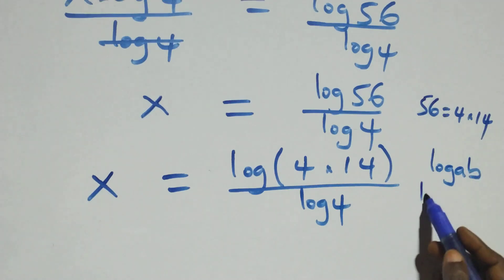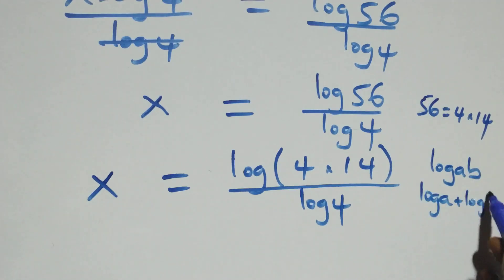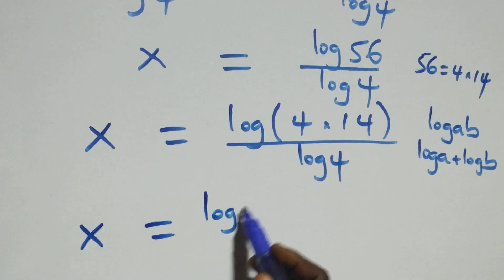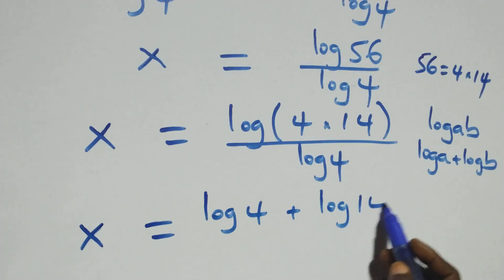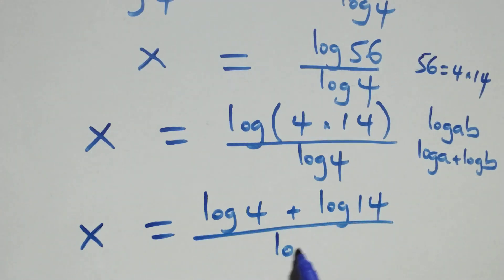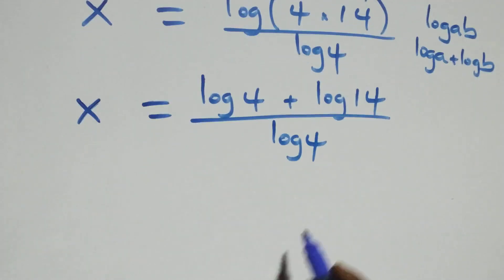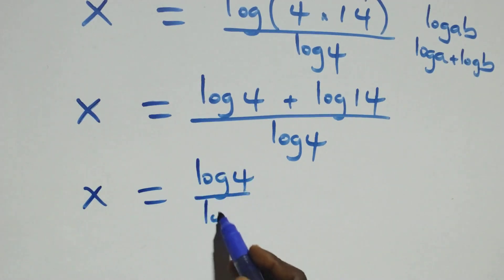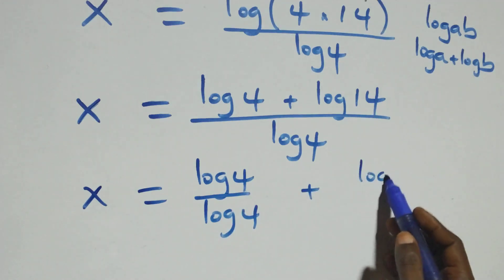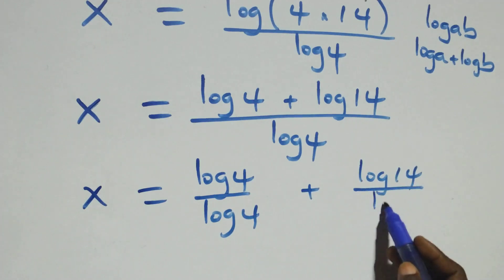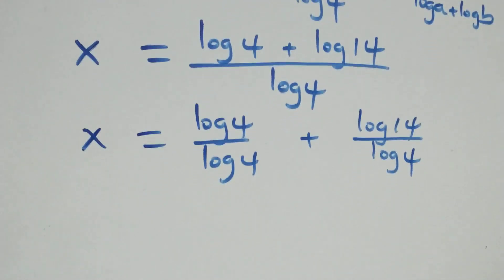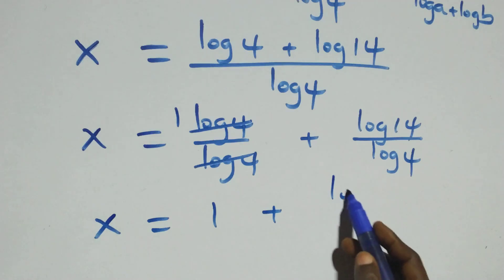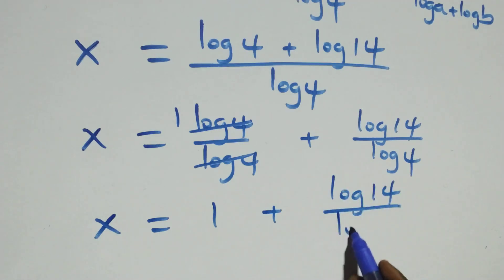Log of a times b is the same as log a plus log b. So what we have here becomes x equals log 4 plus log 14, all over log 4. The next step, we separate this into two fractions: x equals log 4 over log 4, plus log 14 over log 4. Here log 4 over log 4 cancels to give 1, which implies x equals 1 plus log 14 over log 4.